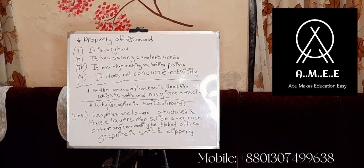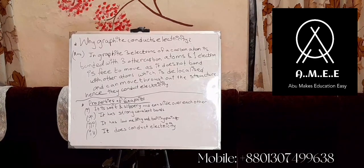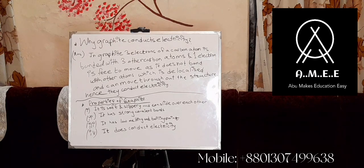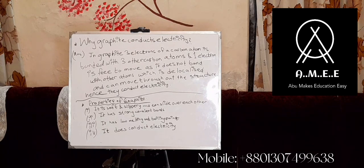Why does graphite conduct electricity? In graphite, three electrons of a carbon atom are bonded with three other carbon atoms, and one electron is free to move, as it does not bond with other atoms. This electron is delocalized and can move through the structure, allowing graphite to conduct electricity.